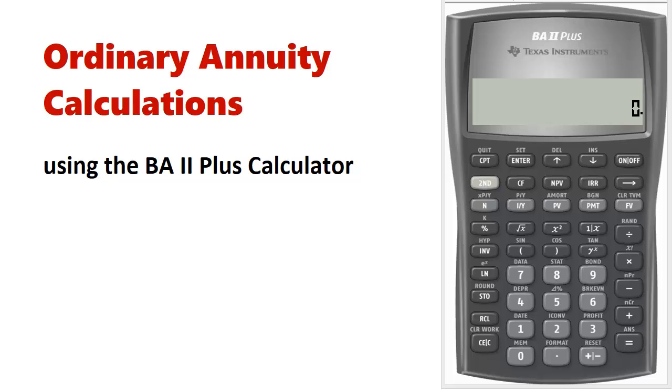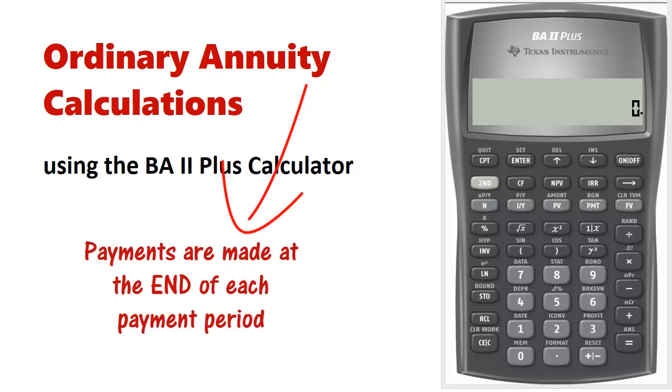Welcome to the Ordinary Annuity Calculations Tutorial using the BA II Plus Calculator. I'm Joshua Emmanuel. Ordinary annuity simply implies that payments are made at the end of the payment interval, like at the end of the month, or at the end of the year, or at the end of the quarter.